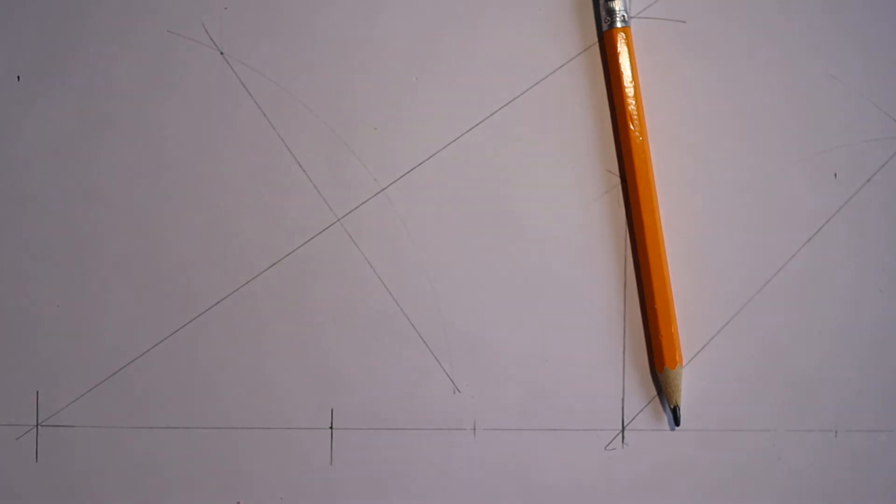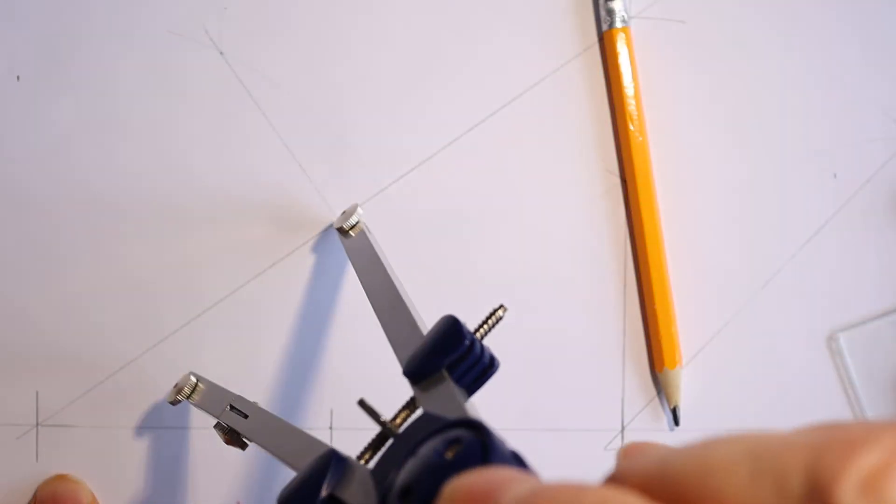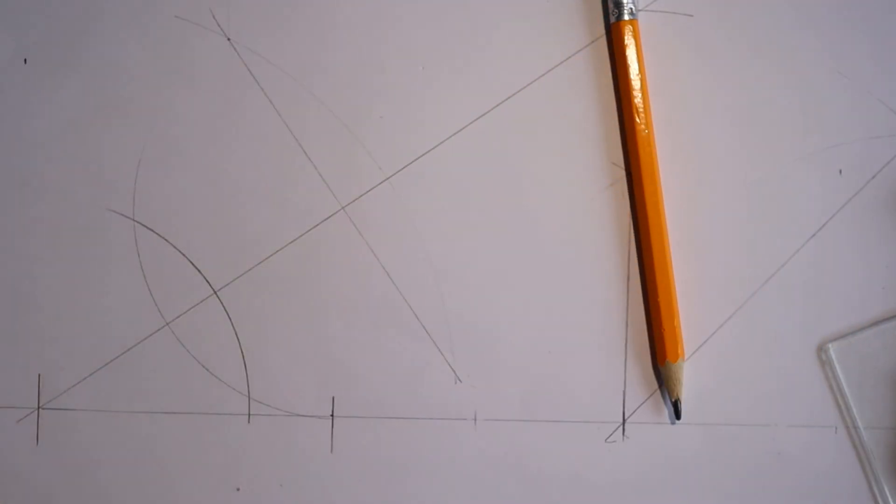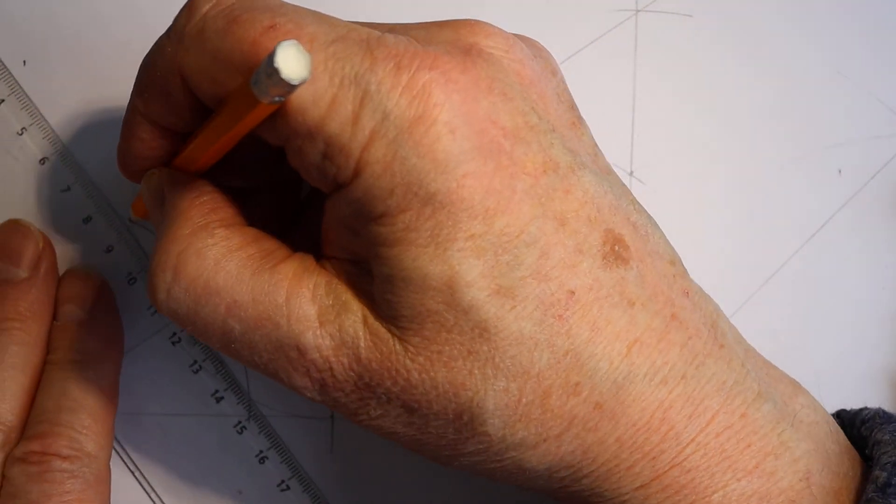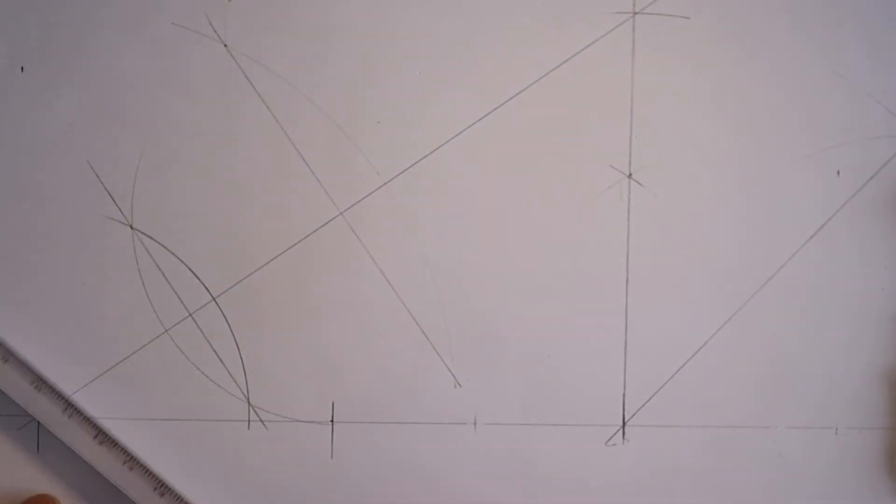And then I'm going to want a second bisection. To make sure this is more than half the length from there to there, and now if I draw this in, there we are, that's the length that's required.